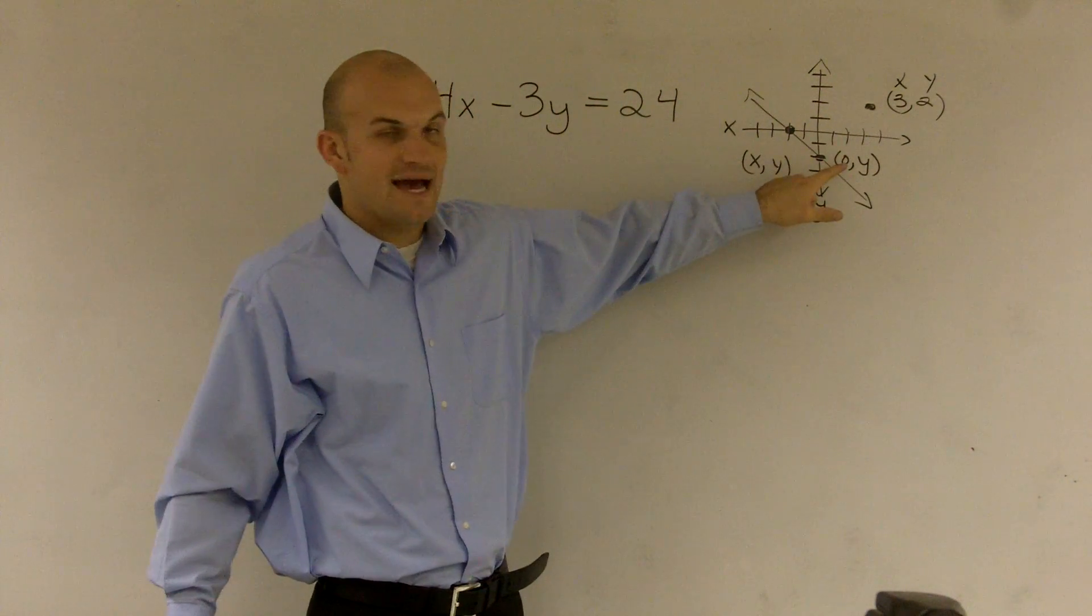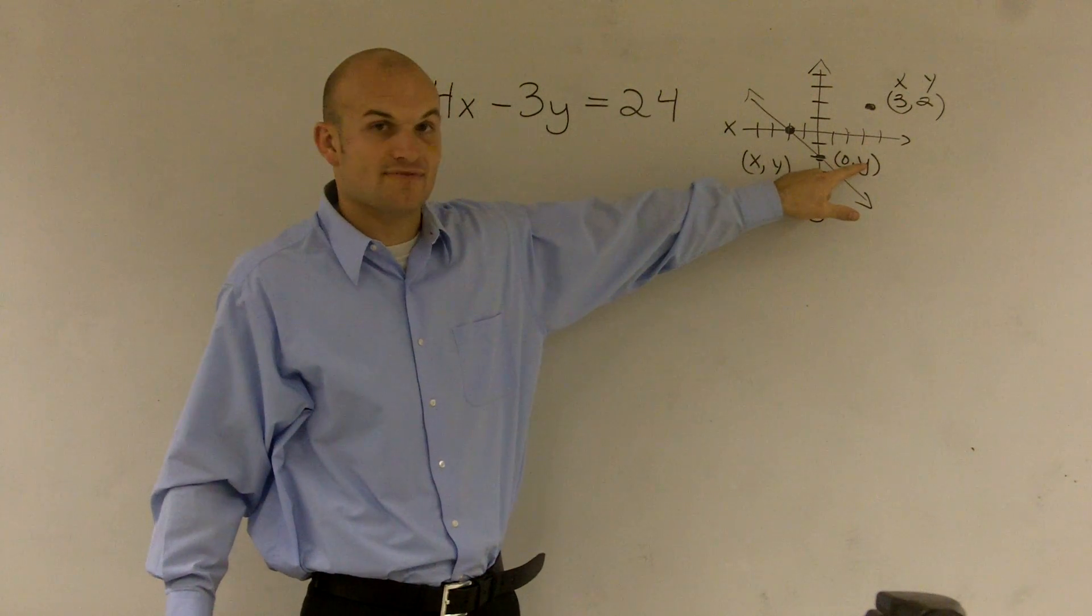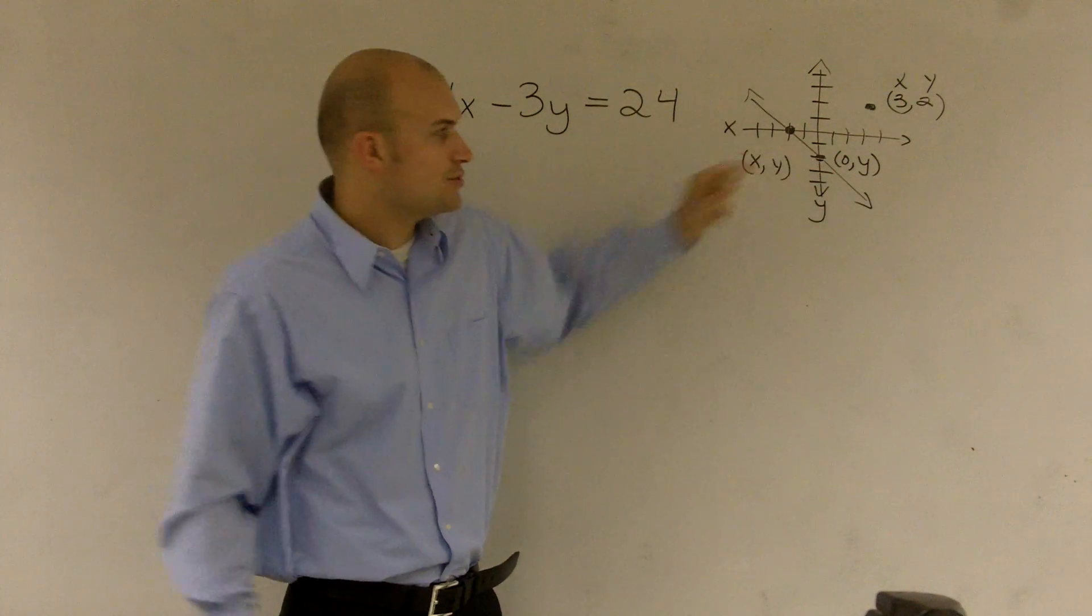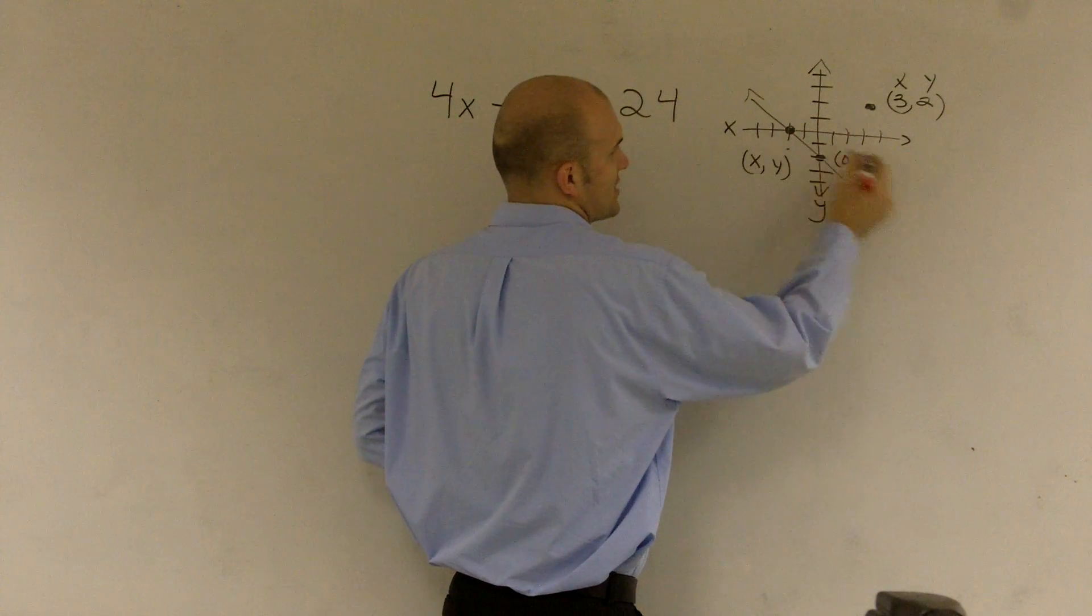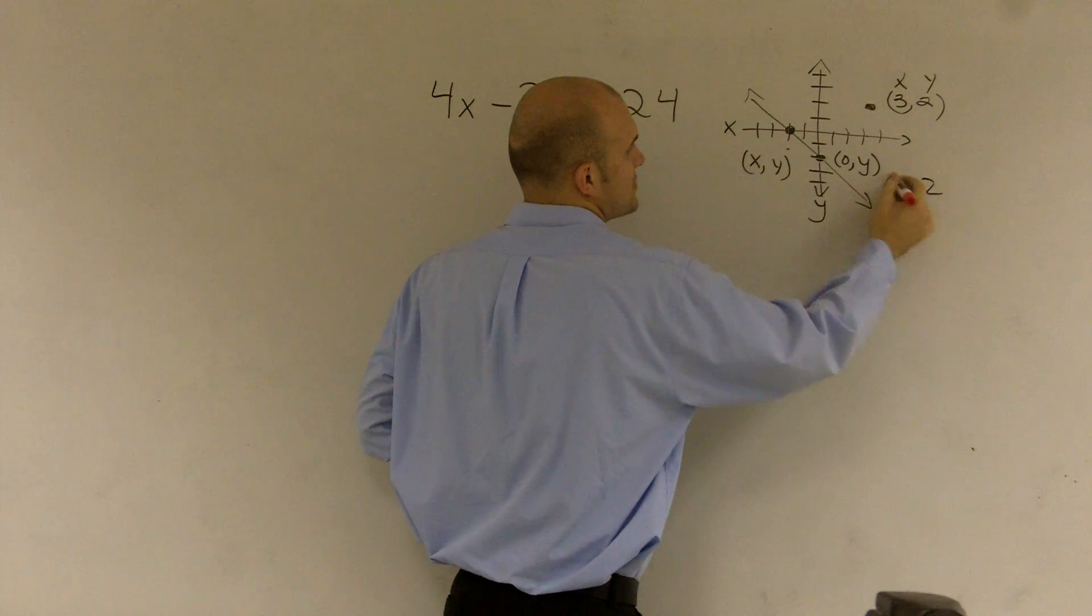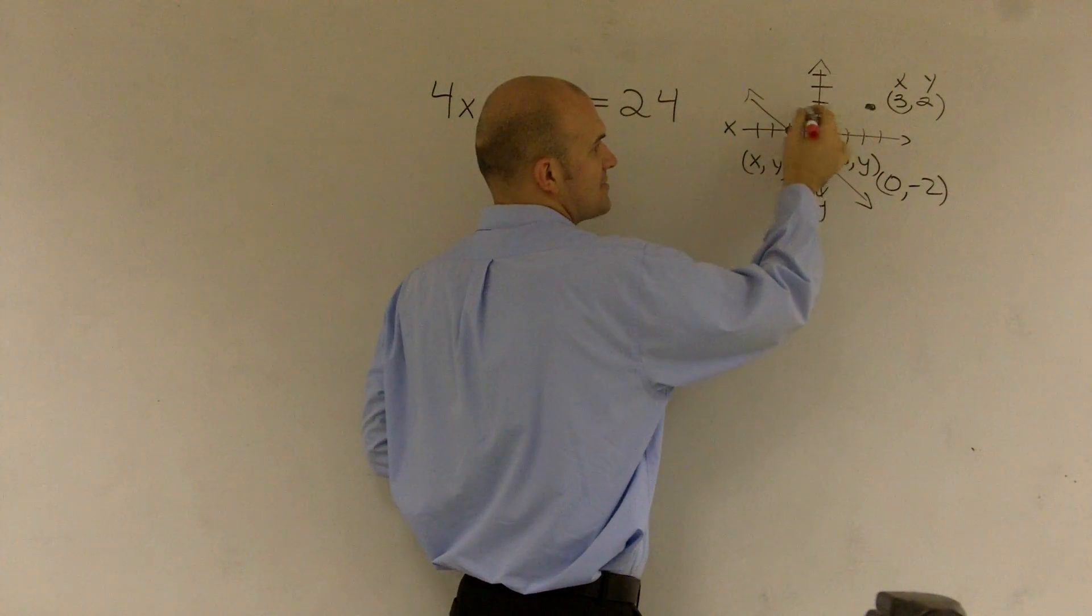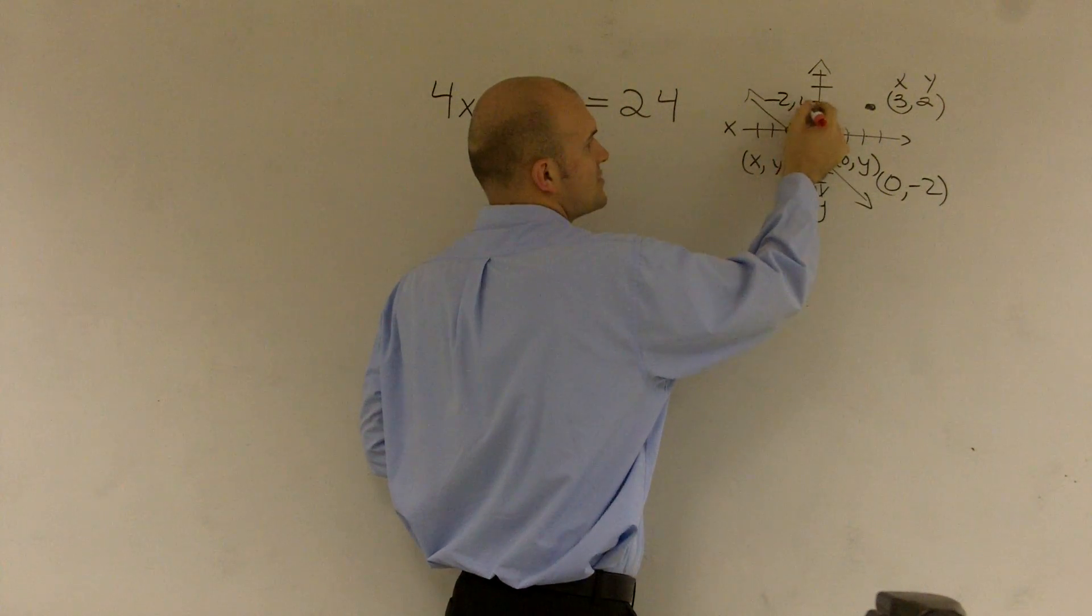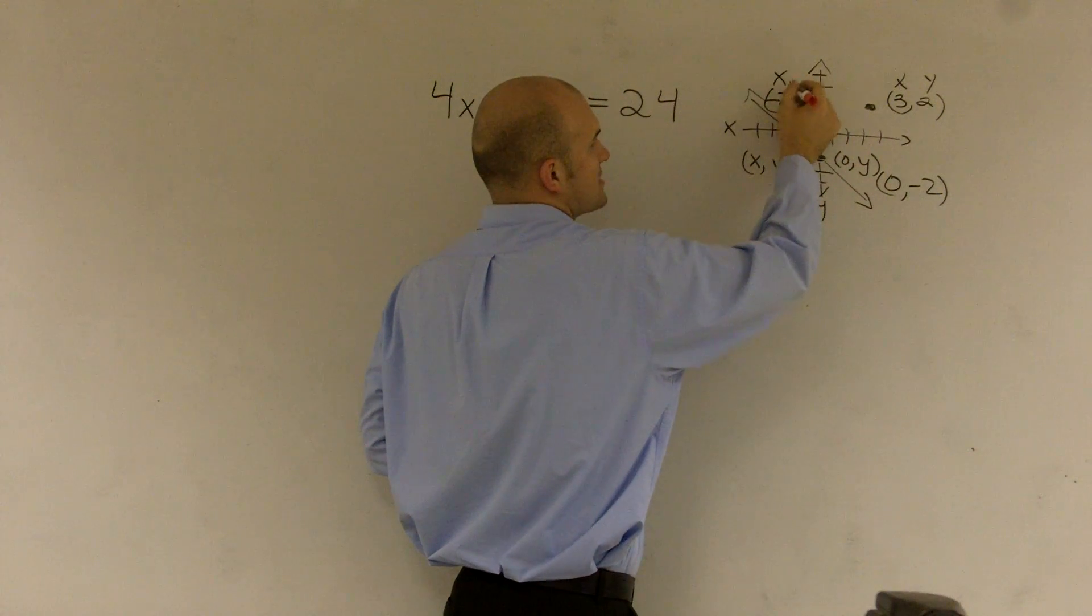Well, for the y-intercept, x is equal to 0, and y has a value, which here is negative 2. So this one would be actually 0, negative 2. And over here, my x-intercept is negative 2, 0, or what we call x comma 0.